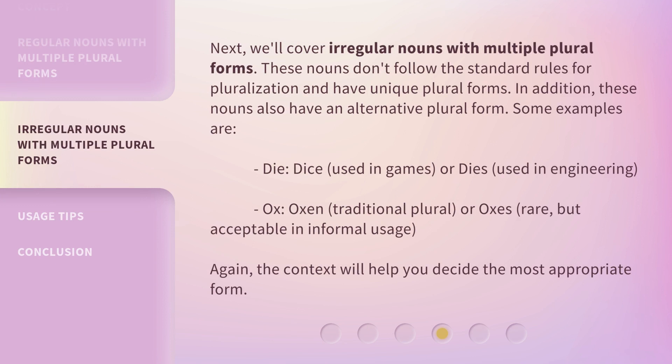Next, we'll cover irregular nouns with multiple plural forms. These nouns don't follow the standard rules for pluralization and have unique plural forms. In addition, these nouns also have an alternative plural form. Some examples are: 'die' — 'dice', used in games, or 'dies', used in engineering. 'Ox' — 'oxen', the traditional plural, or 'oxes', rare but acceptable in informal usage. Again, the context will help you decide the most appropriate form.